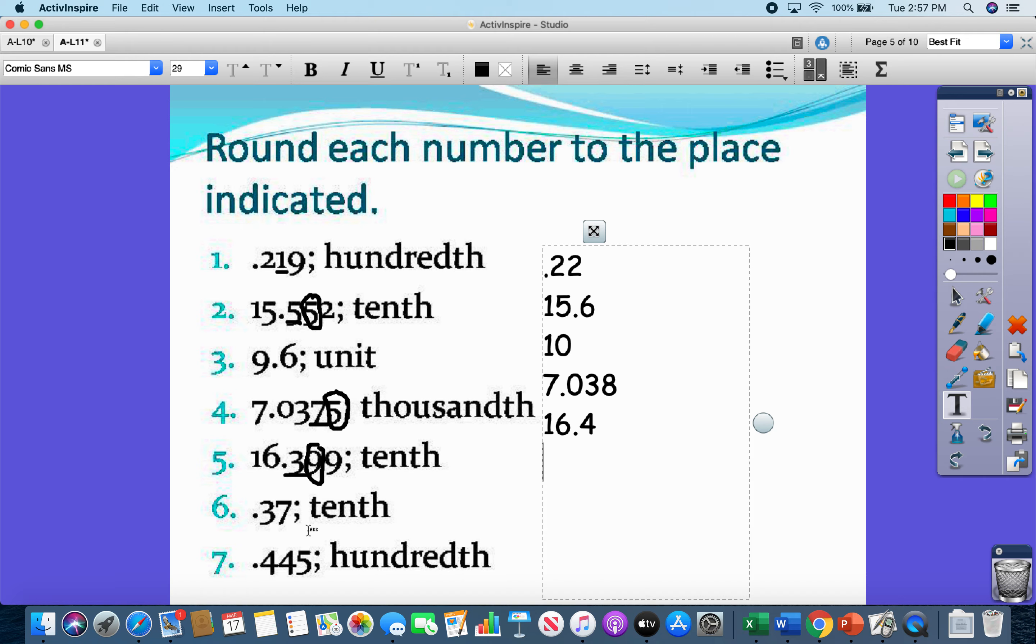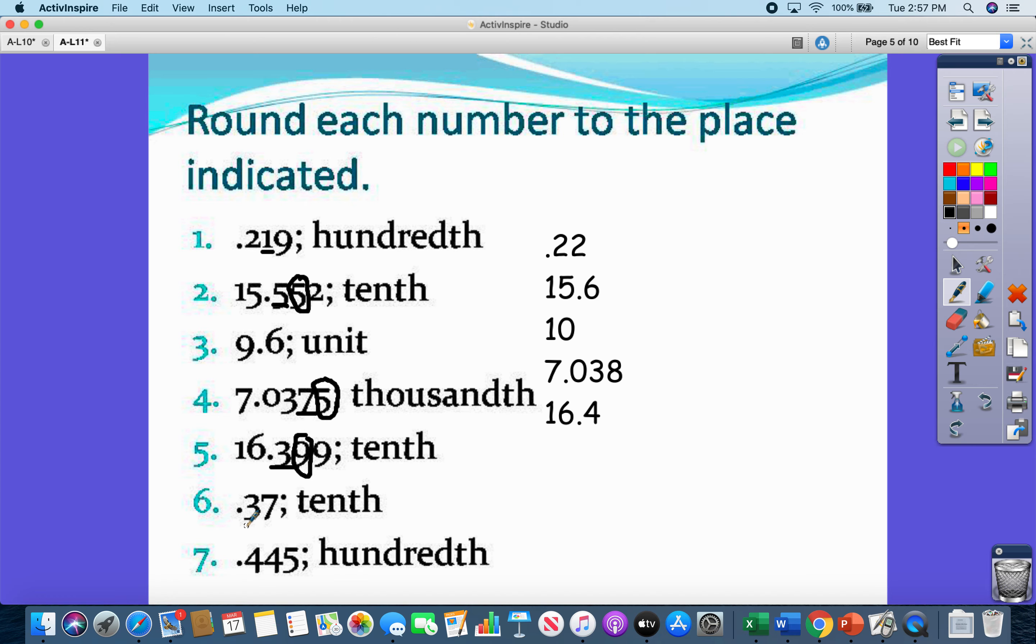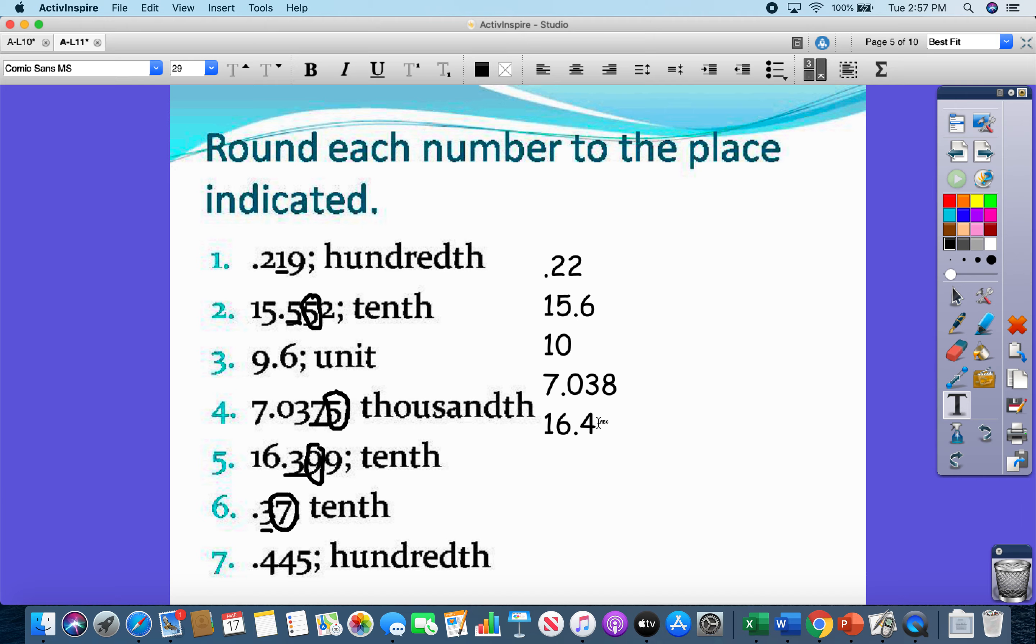Then, number 6 to the nearest tenth. Where's the tenths place? That's the 3. And then, I'm going to circle the digit to the right, which is a 7. 7 rounds up. So that means I'm going to move that 0.3 to be, come on, here we go, 0.4.